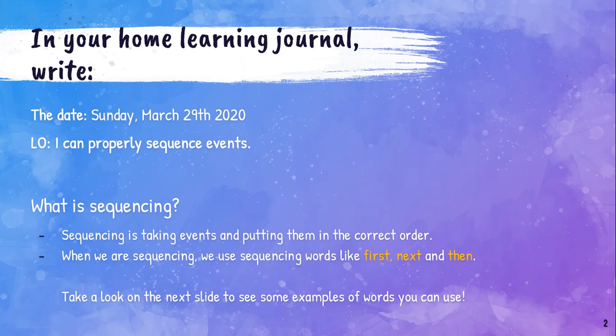So what is sequencing? It's really easy. Basically, sequencing is just when we take events and we put them in the correct order. When we are sequencing, we use sequencing words like first, next, and then. You guys are already really good at using some sequencing words when you tell me about your journal — for a day in Ukraine, some of you were using those words: first I did this, next I went here, and then I ate this.